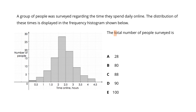To determine the total number of people surveyed, we look at the histogram and take the number of people in each of the columns. In the first column there is one person, in the second there are three, in the third there are seven, and so on.